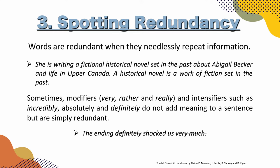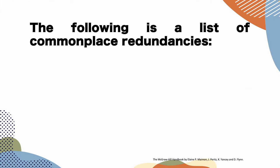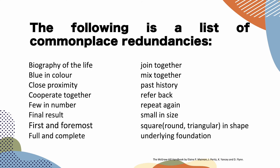Here are more redundancy examples: 'biography of the life' — if it's a biography, it is obviously of a life; 'joined together' — redundant; 'blue in color' — redundant; 'mixed together' — redundant; 'close proximity' — very redundant; 'past history'; 'cooperate together'; 'refer back'; 'few in number'; 'repeat again'; 'final result'; 'small in size'; 'first and foremost'; 'square/round/triangular in shape'; 'full and complete'; 'underlying foundation' — these are all obvious redundancies.